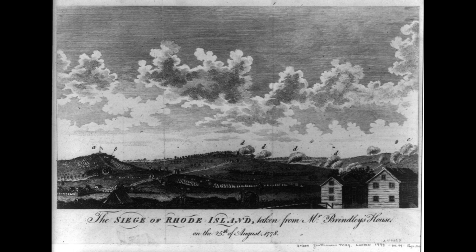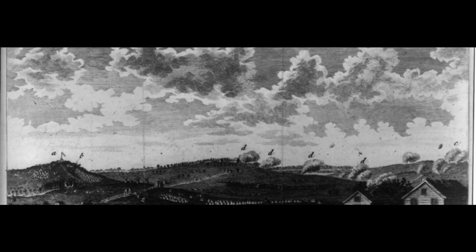The battle began with an artillery exchange between the two sides, which was followed by an infantry assault by the American forces. The Americans initially gained ground, but were eventually forced to retreat due to a lack of reinforcements. Despite the setback, the American forces managed to successfully evacuate the majority of their troops, along with much of their equipment and supplies, from the battlefield.